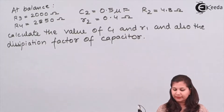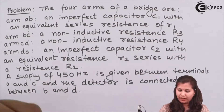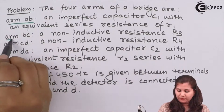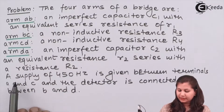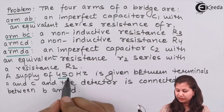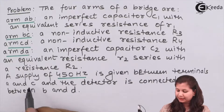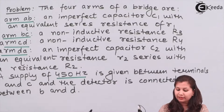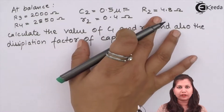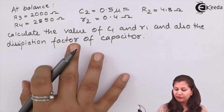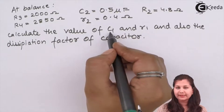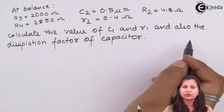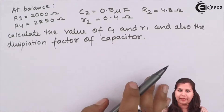Our problem gives us the four arms of a bridge: arm AB, BC, CD, and DA. A supply of 450 Hz is given between terminals A and C, and the detector is connected between B and D. Under balance condition, we are given the values of the variables and we have to find out the value of capacitor C1 and resistor small r1. We also have to calculate the dissipation factor of the capacitor.